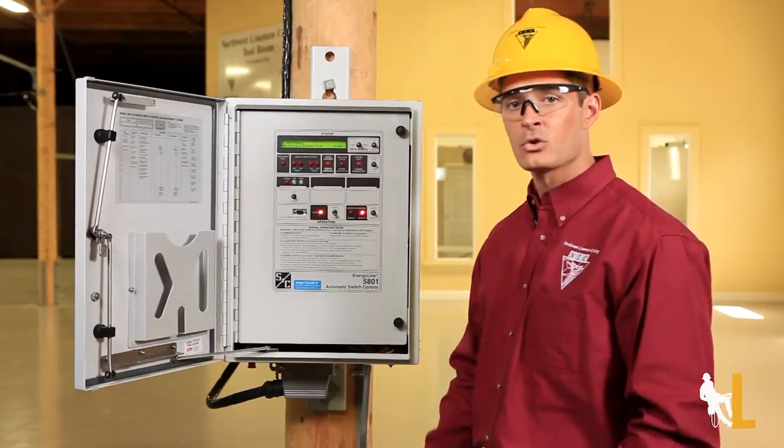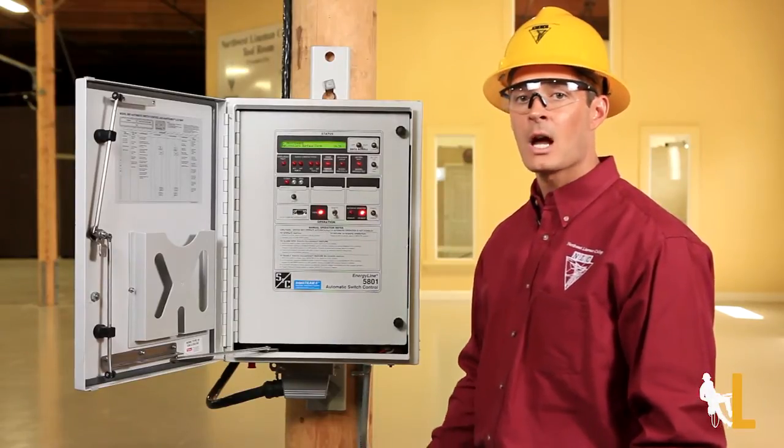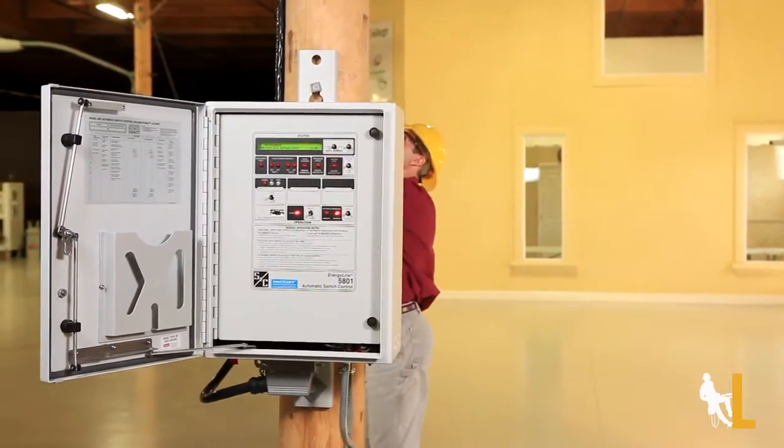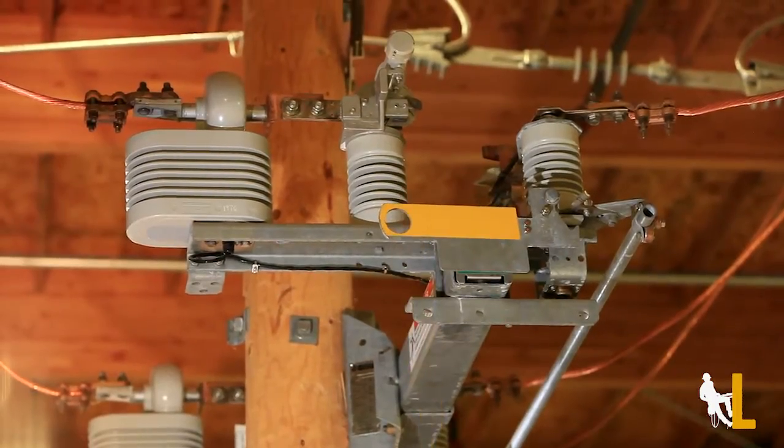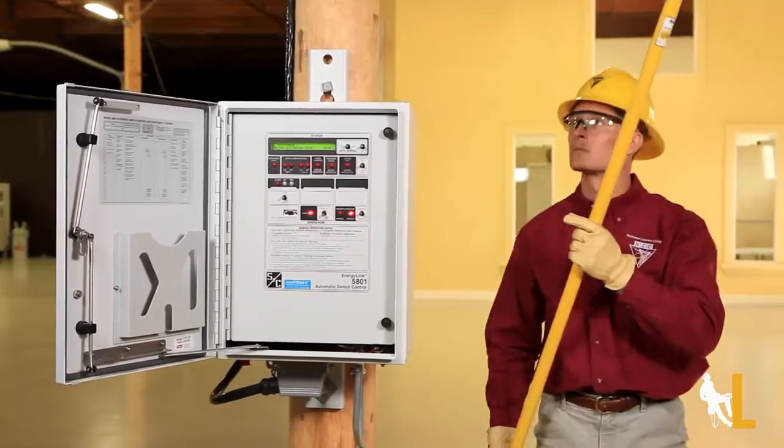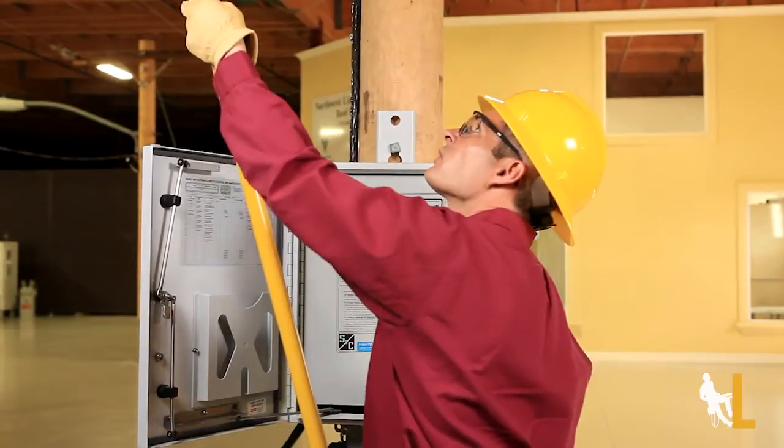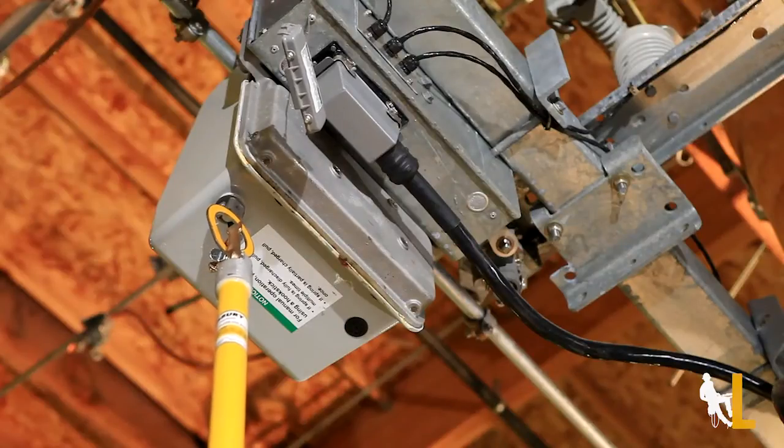If for some reason the control panel doesn't have power, you can operate the switch manually. I'm going to pull down on this ring to close the switch. You may have to pull several times.